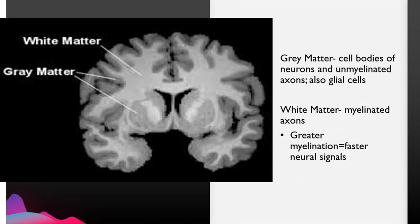We're going to look at white matter as well. White matter is the myelinated axons, and greater myelination equals faster neural signals. As we looked at action potentials yesterday, the myelination of axons helps carry those action potentials to other regions of the brain or other parts of the body.